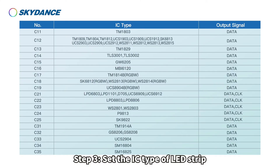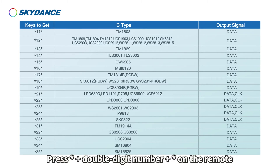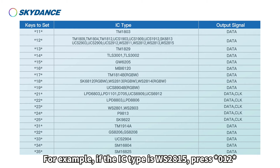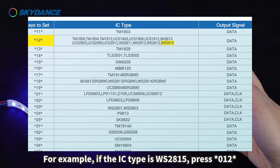Step 3: Set the IC type of the LED strip. Press asterisk, plus a double-digit number, plus asterisk on the remote. For example, if the IC type is WS2815, press asterisk 12 asterisk.